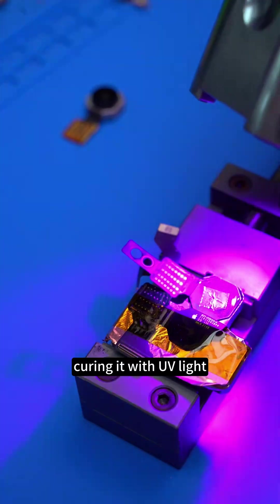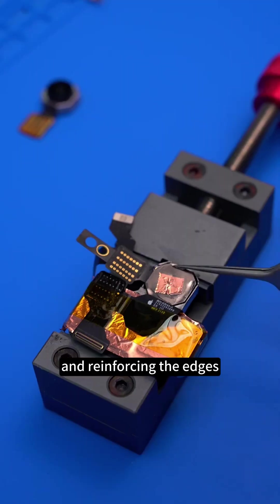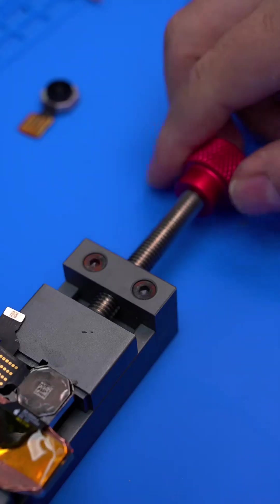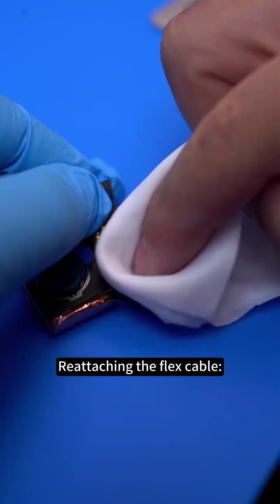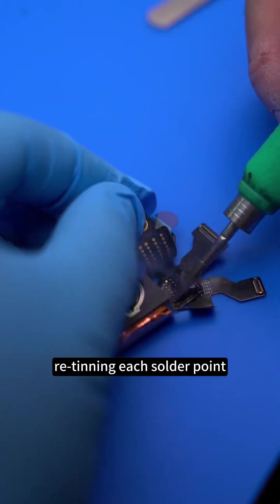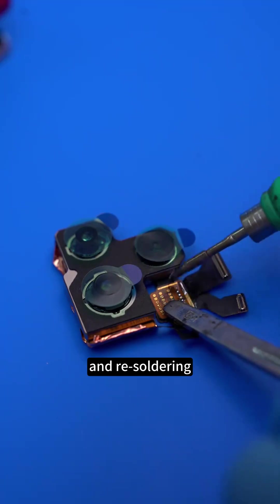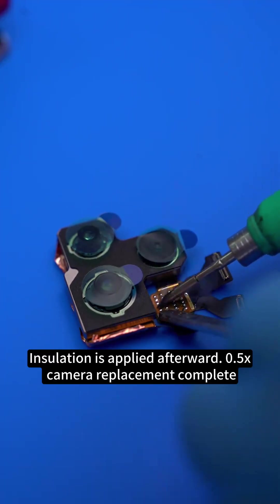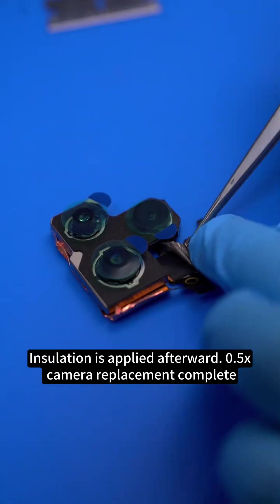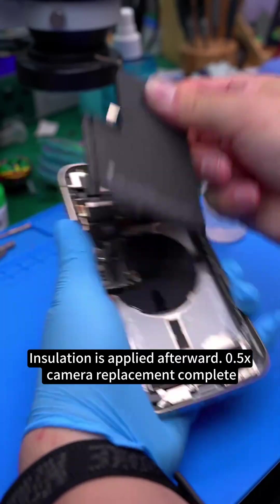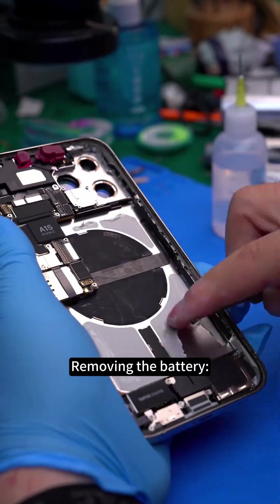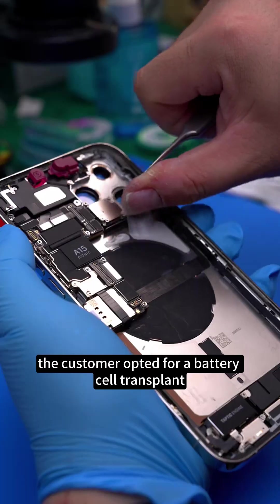Curing it with UV light and reinforcing the edges. Reattaching the flex cable, applying flux, re-tinning each solder point, and re-soldering. Insulation is applied afterward. 0.5x camera replacement complete. Removing the battery - the customer opted for a battery cell transplant, detaching the battery flex cable.